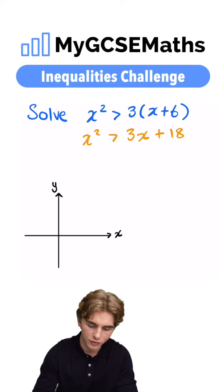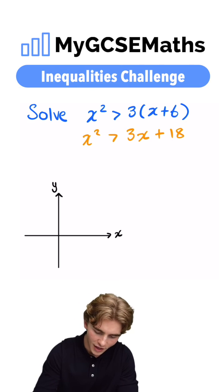Next step, we want to get everything onto one side. We're going to get x squared minus 3x minus 18 is greater than 0.